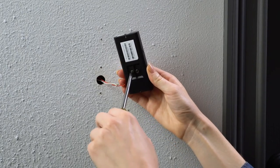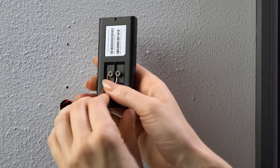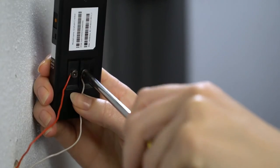Loosen both terminal screws on the back, then loop a doorbell wire around each one. Tighten the terminal screws to secure.